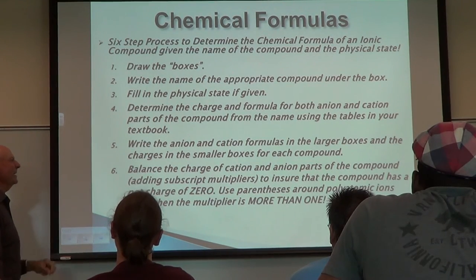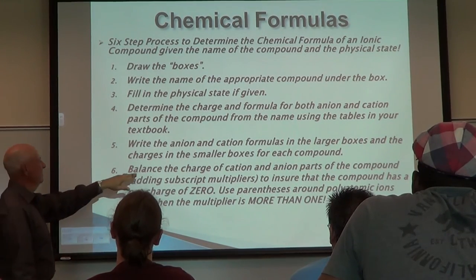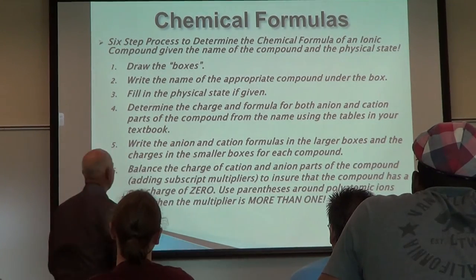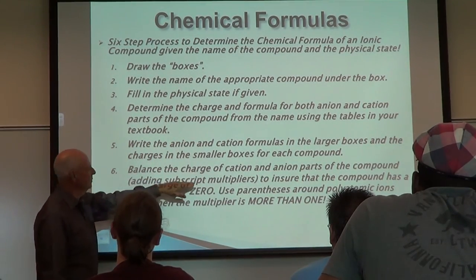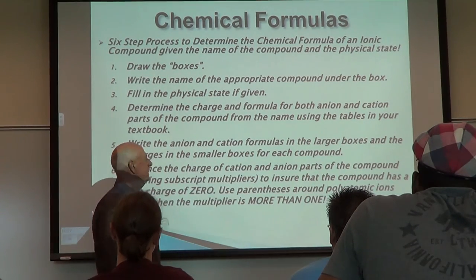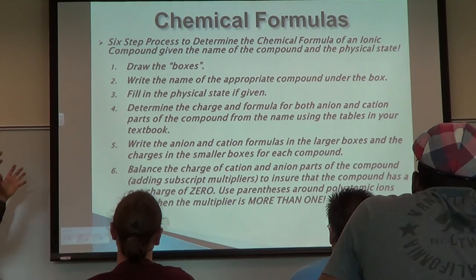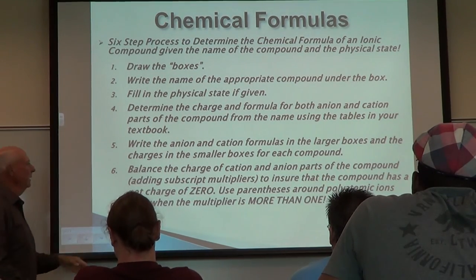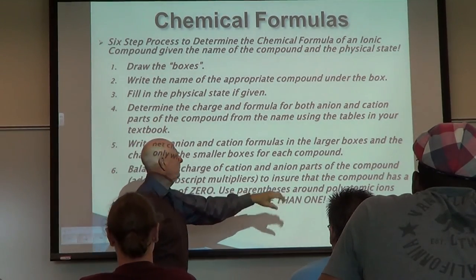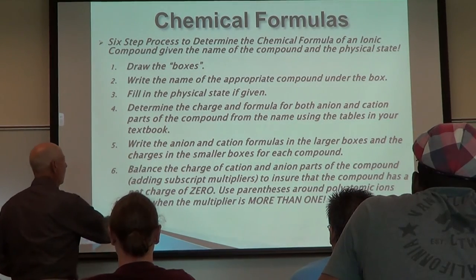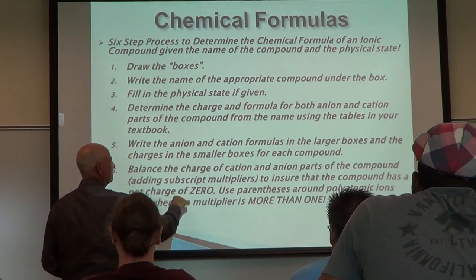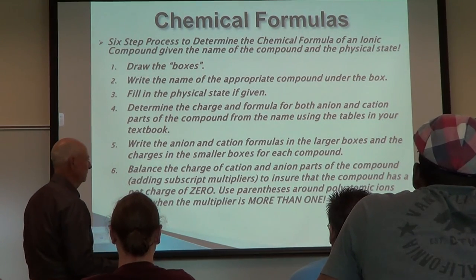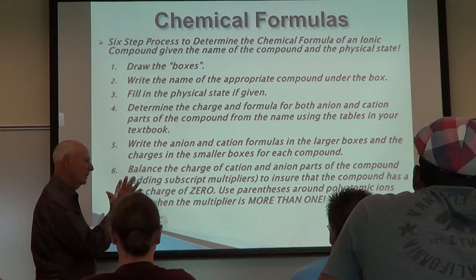The sixth step, the last step, is to balance the charge of the cation and anion parts of the compound, adding subscript multipliers to ensure that the compound has a net charge of zero. Use parentheses around the polyatomic ions only when the multiplier, the subscript multiplier, is more than one. If it's one, you don't have to use parentheses.